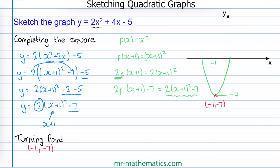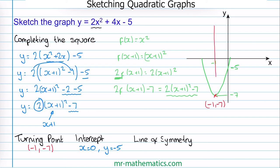Next we'll work out the y-intercept. When x equals 0, y is equal to negative 5. And finally the line of symmetry — we know this runs parallel to the y-axis and cuts through the turning point, so this has the equation x equals negative 1.